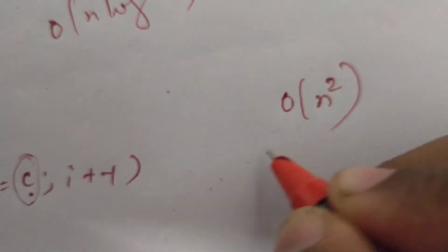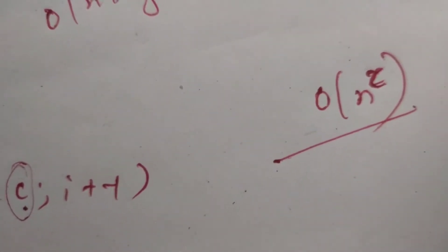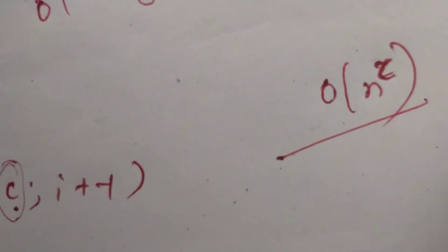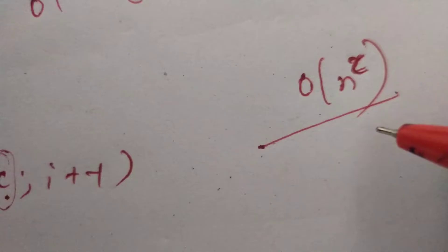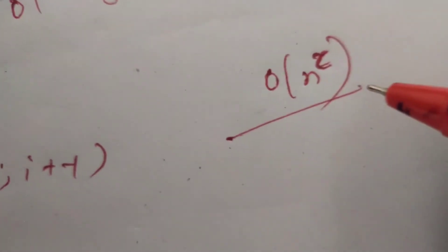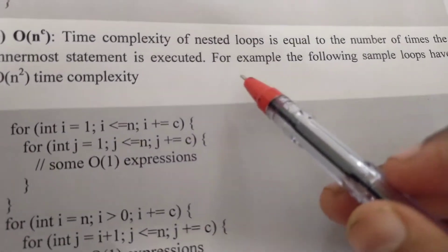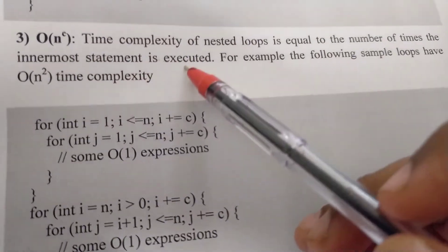Next, order of n squared — that is n raised to c. This applies to nested loops: the innermost statements execute repeatedly. The time complexity of nested loops is equal to the number of times the innermost statement is executed, giving order of n raised to c.